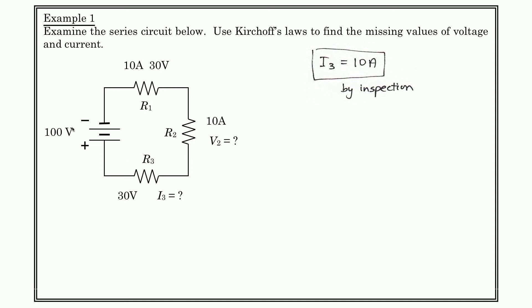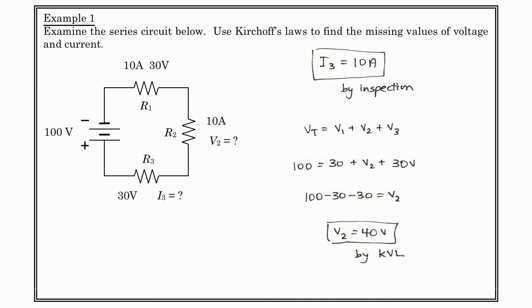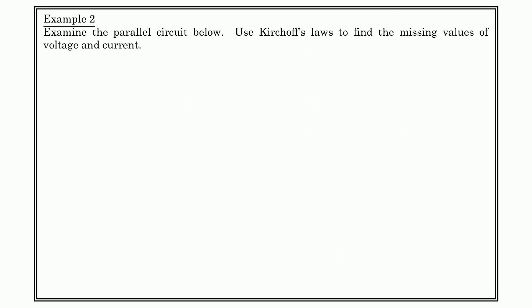I also know that if I've got 100 volts here and I go around this loop, this is a voltage increase. I'm using 30 volts of potential here and 30 volts of potential down here. So I can say that 100 equals 30 plus V2 plus 30, and I can simply rearrange and solve to find that V2 is equal to 40 volts — and that's by Kirchhoff's Voltage Law. We could also solve for resistance using V = IR for each resistor.